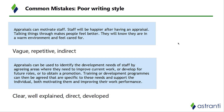Let's take a look at an example. On the screen in the blue boxes, you can see two different paragraphs written in very different ways, both responses to the same task — a question on the benefits and drawbacks of appraisals. The first one reads: 'Appraisals can motivate staff. Staff will be happier after having an appraisal. Talking things through makes people feel better. They will know they are in a warm environment and feel cared for.' That is more or less the same thing said in three or four different ways. It's not very direct, it's a little vague, and it doesn't clearly establish we're talking about benefits. If you write like that in the exam, you may get half a mark, whereas you could be getting one or two marks by fully developing the point.